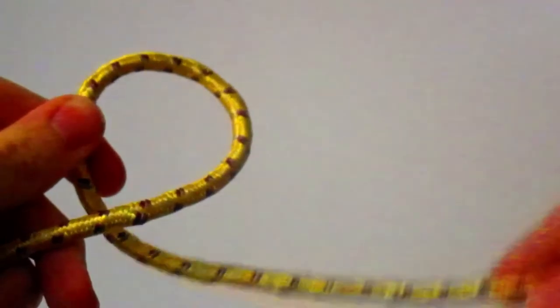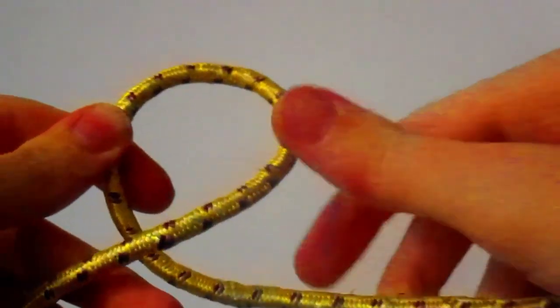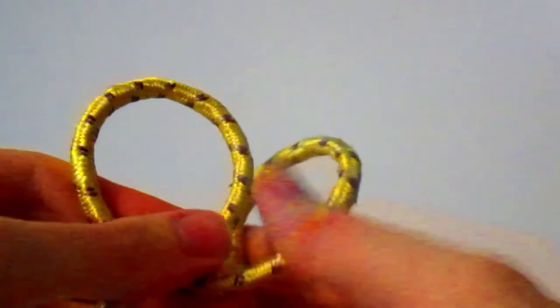Allow me to explain. First, make an underhand loop. The working end is underneath the standing part. Now, make a second one.